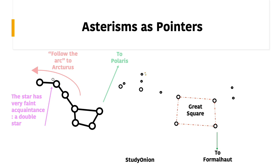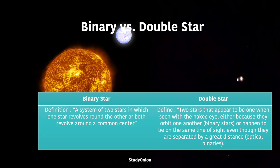Just because we've talked about the Plough having a double star, I'll quickly cover the difference between binary and double stars. A binary star is a system of two stars where one revolves around the other, or both revolve around a common centre. A double star, as you can see in the picture, refers to two stars that appear to be one when seen with the naked eye.